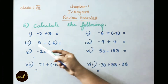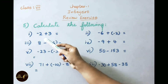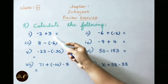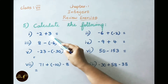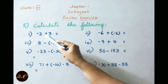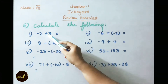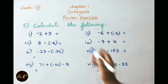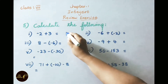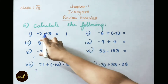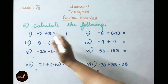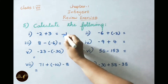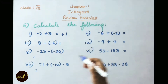See the first sum here: minus 2 plus 3. Here 3 is greatest. Opposite signs are there, so we have to do subtraction. So 3 minus 2 equals 1. Since 3 is greatest and its sign is positive, the answer is plus 1.